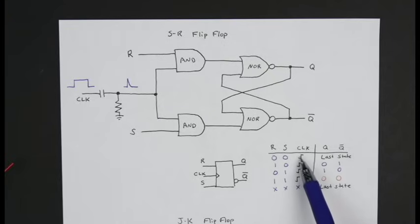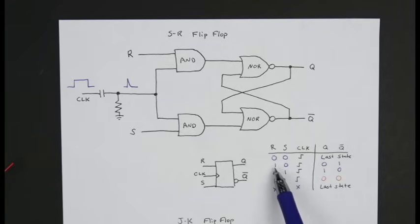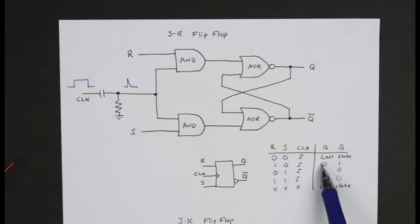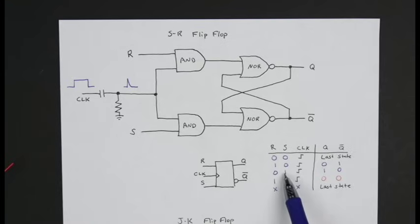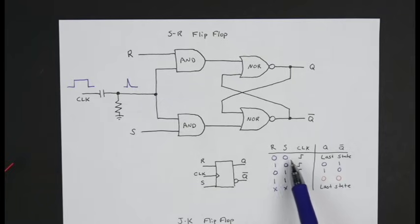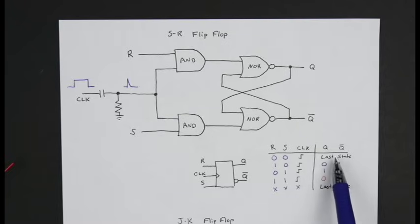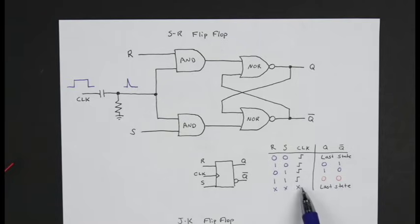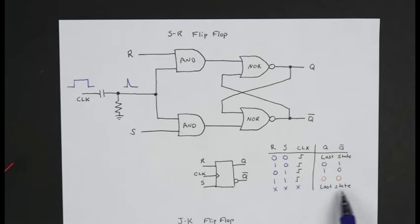When the clock rising edge happens, it looks at R and S just at that moment. If reset is active and set is not, the output Q goes to zero and the complement goes to one. If set is active and reset is not, then Q turns on and the complement of Q goes off. If both reset and set inputs are zero at the clock rising edge, it stays in the last latched state. And if there's no rising edge — if the clock is doing anything else — then no matter what set and reset are doing, the flip-flop stays in its last state.